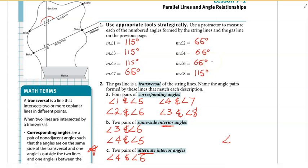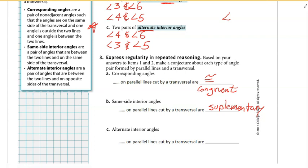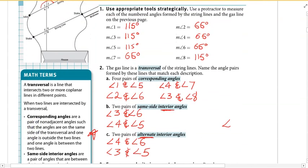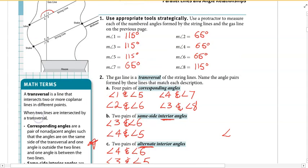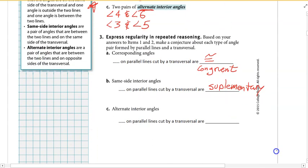What about four and five? Four is 65, five is 115 — those are also supplementary. So same side interior angles are supplementary. And alternate interior angles: four and six — both 65, congruent. Three and five — both 115, congruent. So alternate interior angles are congruent.